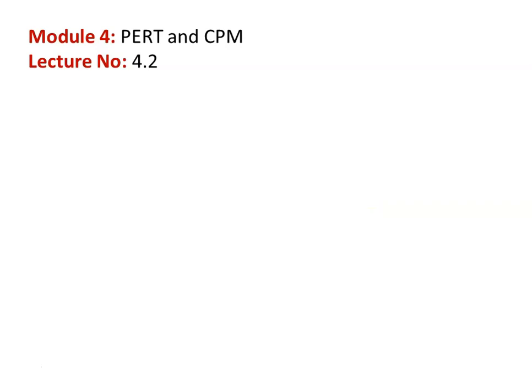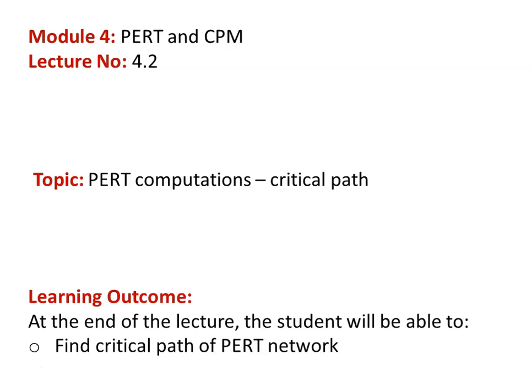In the earlier lecture, we discussed the construction of the PERT network and calculating the variance. In this lecture, we are going to discuss about the PERT computations, various calculations of the PERT network, and finding the critical path of the PERT network. The learning outcome: at the end of the lecture, the student will be able to find the critical path of the PERT network.